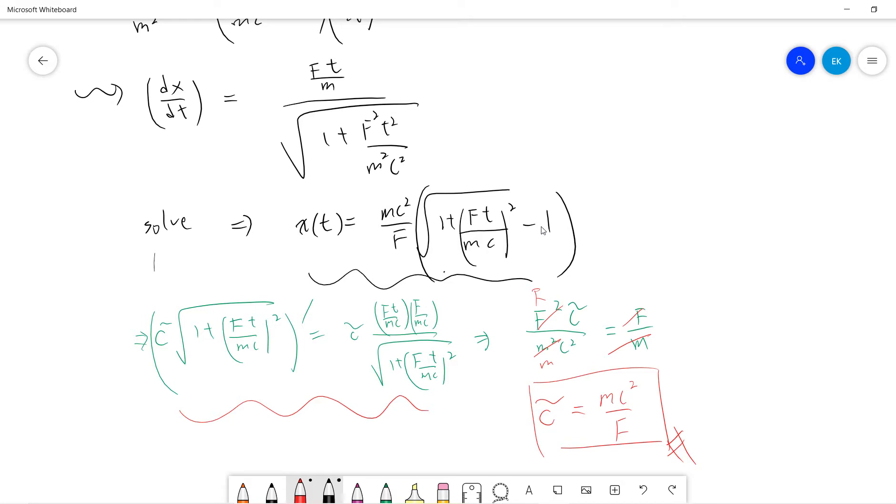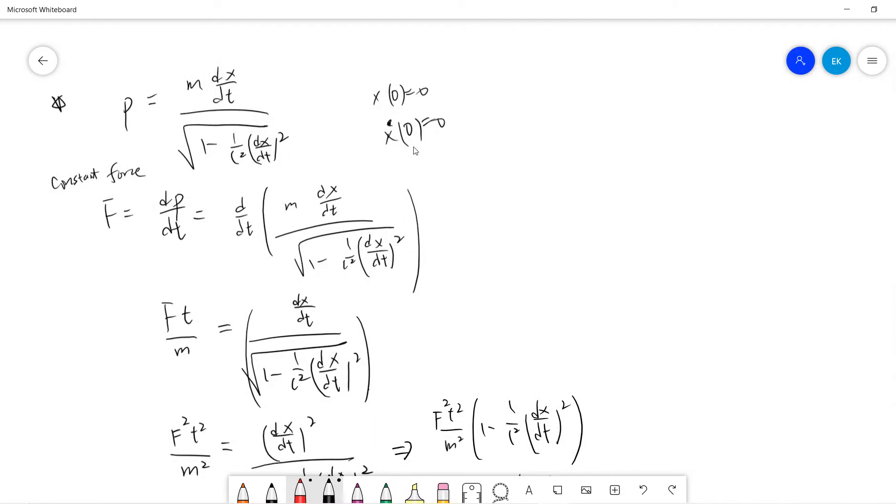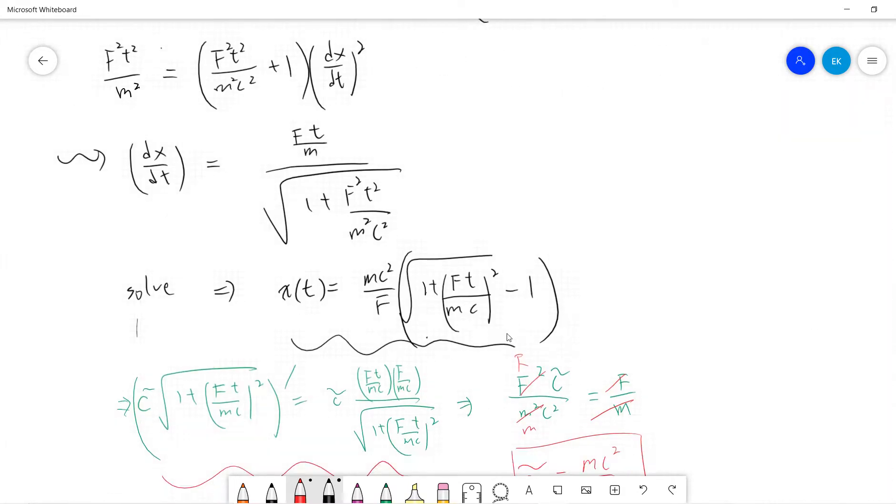You put it in, and why there is a minus one here? Because when t is 0, when velocity is 0, and x is 0, so you get this. And yeah, so this is the answer.